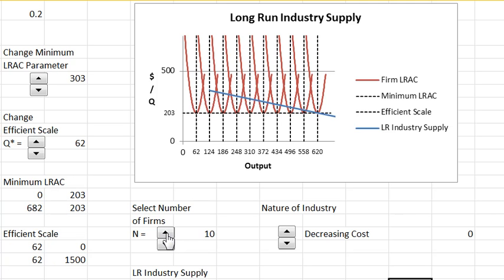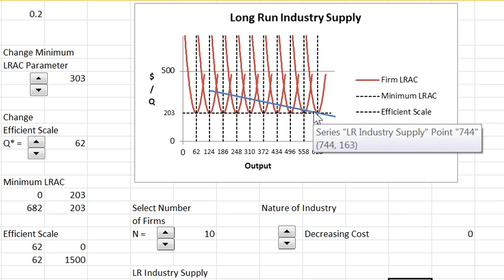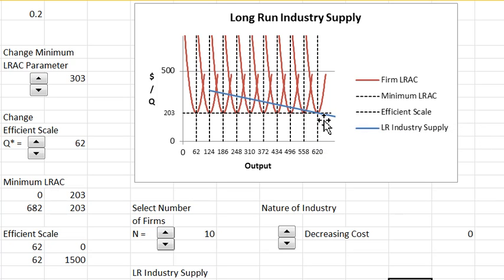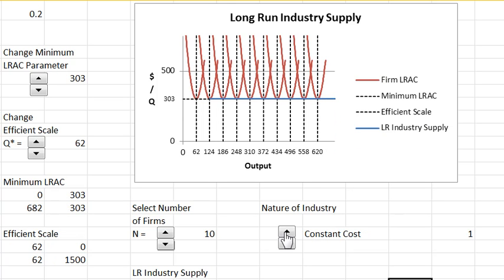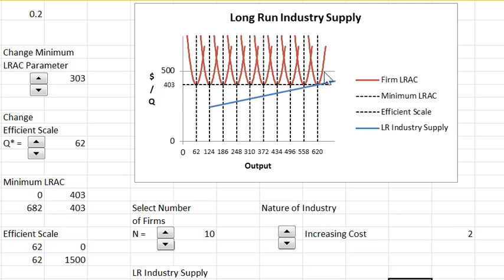So in fact minimum average cost can fall with industry output. And that's what's happening here. And as a consequence, as the industry gets bigger the supply price falls. So you can have decreasing cost, you can have constant cost where the supply price doesn't vary with output, and you can have increasing cost where the supply price increases with output.